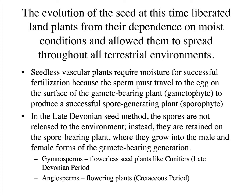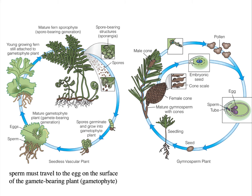For a seedless vascular plant like a fern, it produces spores, and those spores germinate to produce the gametophyte with female parts (eggs) and male parts (sperm). This requires a moist environment for the sperm to reach the eggs, producing the adult sporophyte. Whereas for the gymnosperm — the seeded plants — the male and female parts are enclosed within the seed, and depending on wind pollination, the sperm can reach the cones and reproduce without needing moisture.